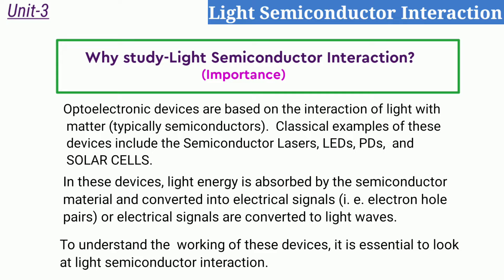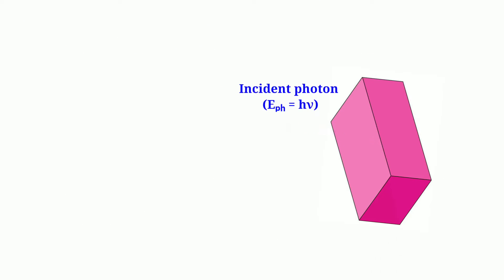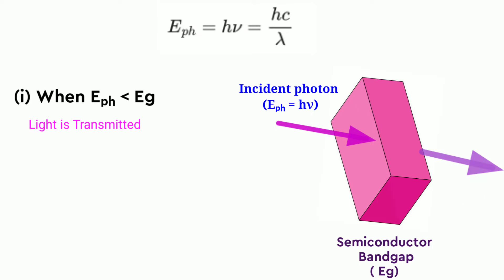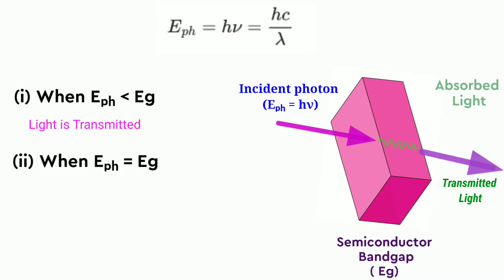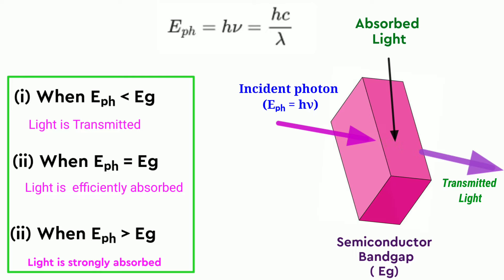Photons incident on a semiconductor of bandgap Eg can be divided into three categories. If Eph < Eg, the photon interacts only weakly and passes through as if the material were transparent. If Eph = Eg, the photon has just enough energy to create an electron-hole pair and is efficiently absorbed. If Eph > Eg, photons are strongly absorbed.